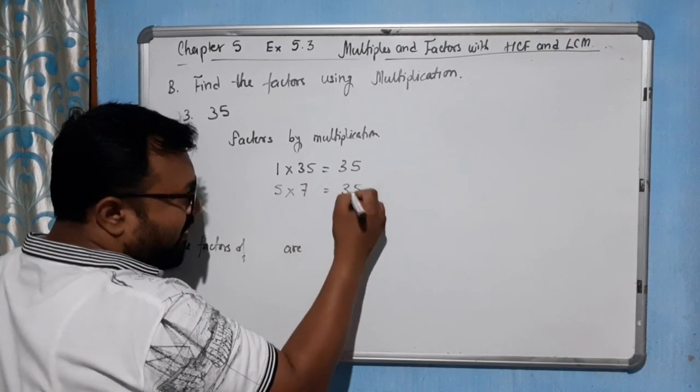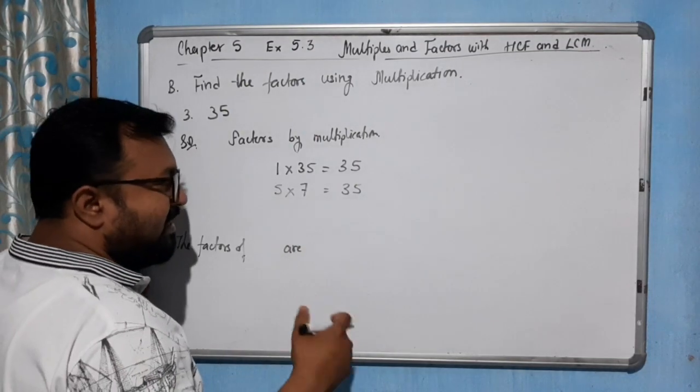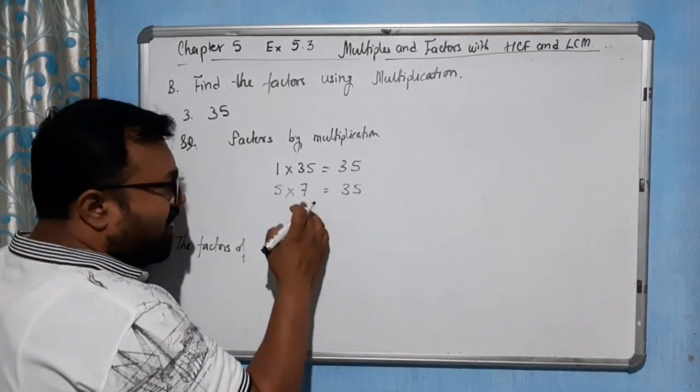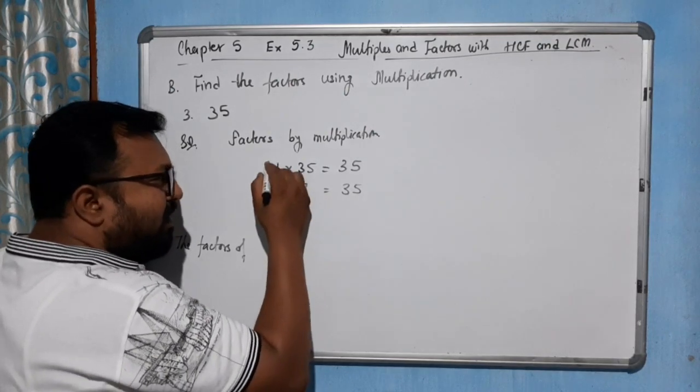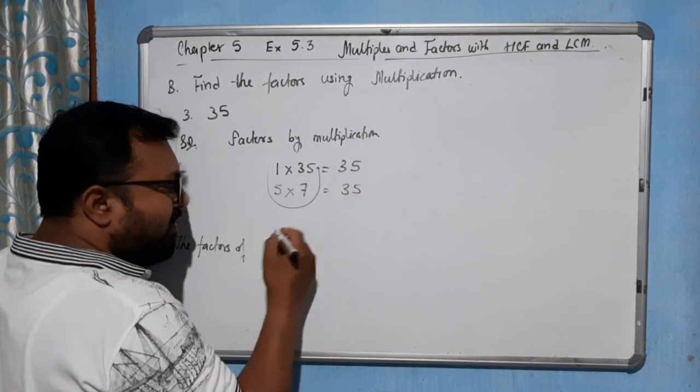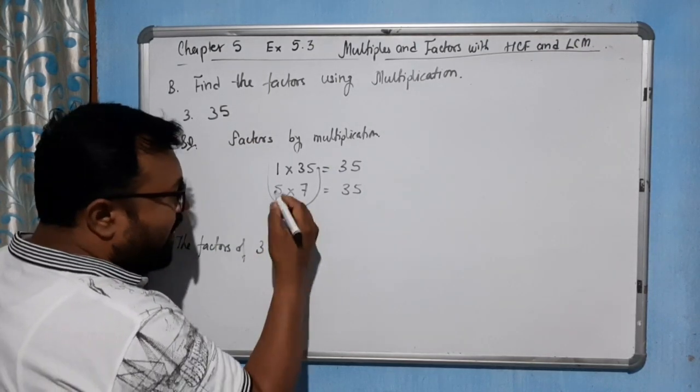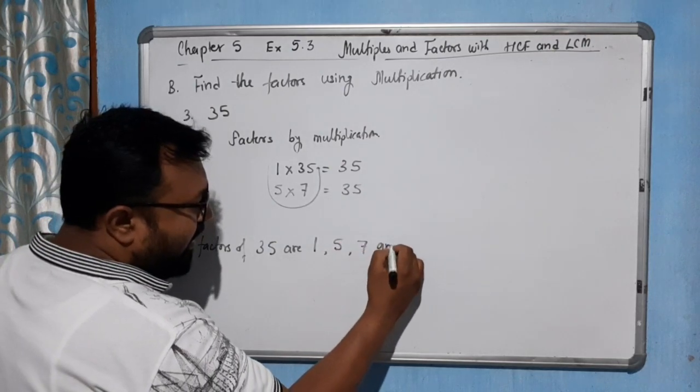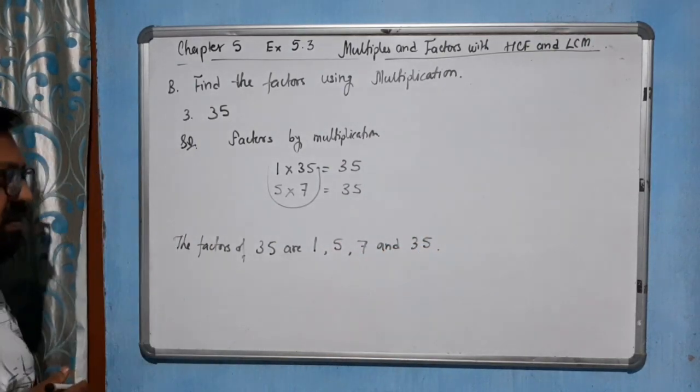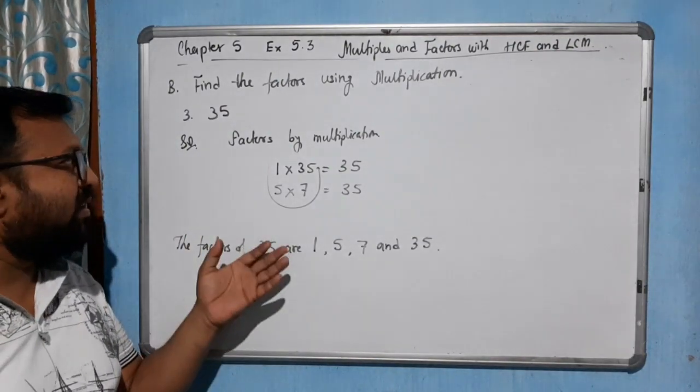Then by 6, not possible: 6 times 5 is 30, 6 times 6 is 36, so not possible. By 7: 7 times 5 is 35, and in this way it will return back. So the factors of 35 are 1, 5, 7, and 35 itself. So I hope you have understood this part: how to find the factors by using multiplication.